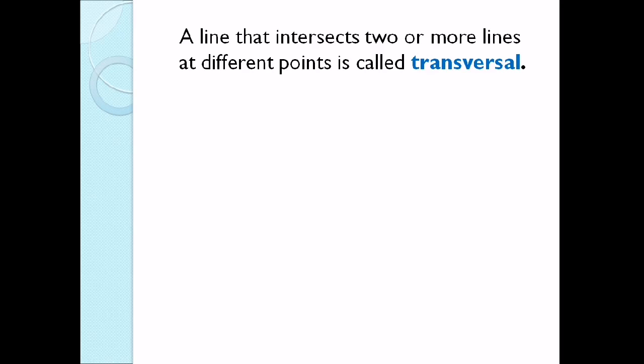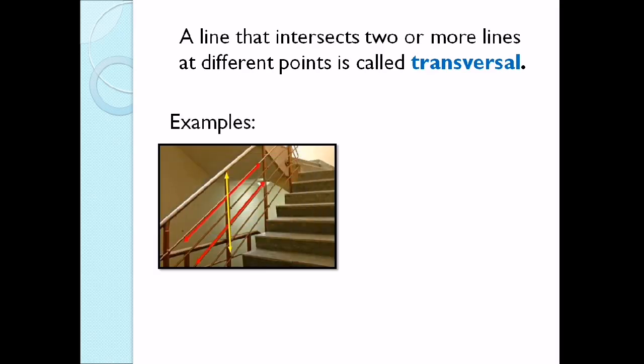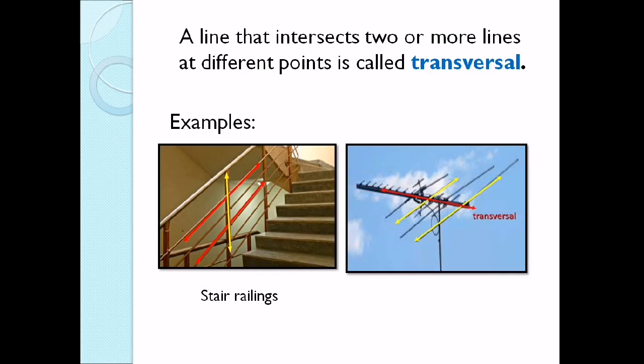Let us look at some examples of a transversal. One example is stair railings. Notice that we have parallel lines shown in red, and the yellow lines are the transversal. Another example is an antenna — the yellow lines are the parallel lines, and the red is the transversal. Those are some examples of transversal lines.